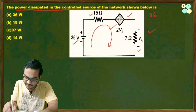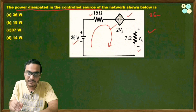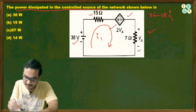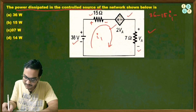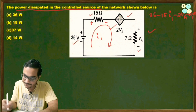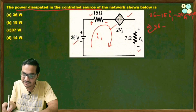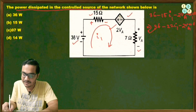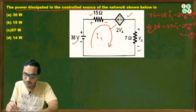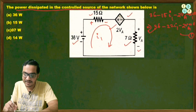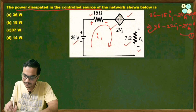Applying KVL: 36 minus 15·i1 minus 2Va minus 7·i1 = 0. This simplifies to 36 minus 22·i1 minus 2Va = 0. Call this Equation 1. In the 7 ohm resistance, the voltage is Va and the current flowing through it is i1.